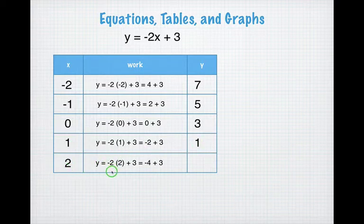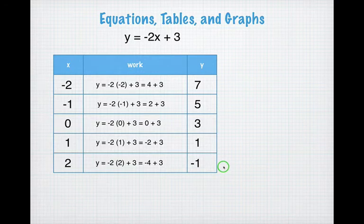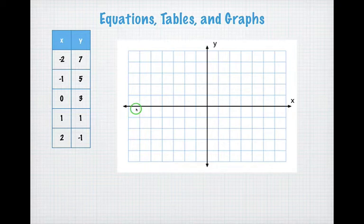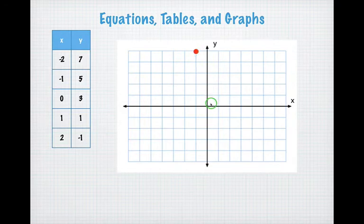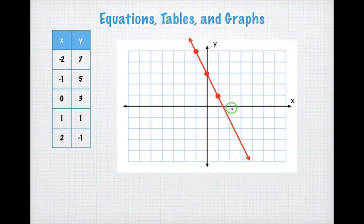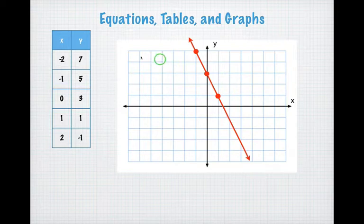Finally, I'm going to plug in 2: negative 2 times 2 plus 3 is negative 4 plus 3, which is negative 1. So now we have all our x and y points and we can draw the graph exactly as we did before. Here are the same points from the last slide. I'm going to plot three in the middle: negative 1, 5 is there; 0, 3 is right there; and 1, 1 is right there. I'm going to draw a straight line between those three. And there we go — from the equation, I got the table and the graph.